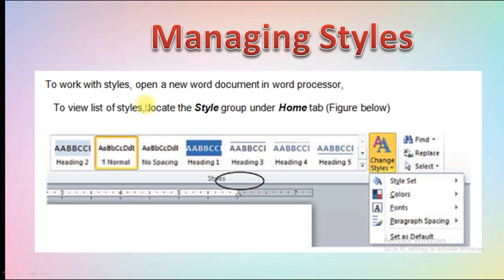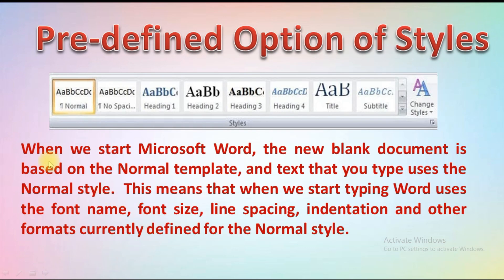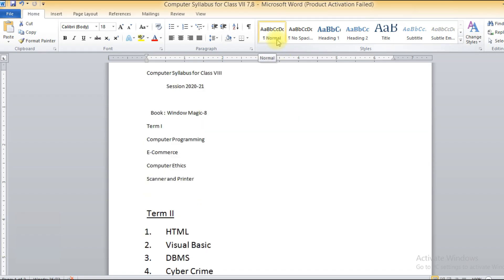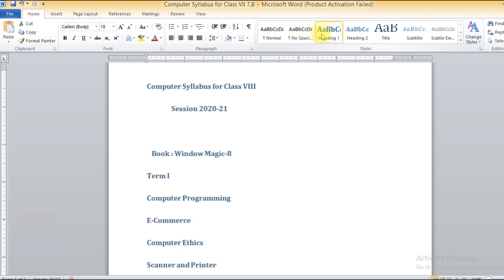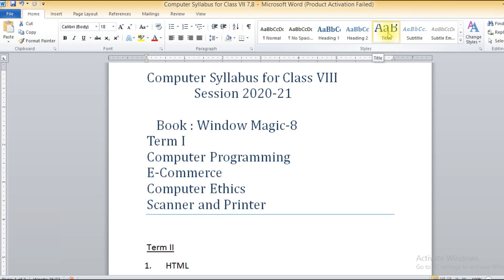To locate the styles, open a new word document. To view a list of styles, locate the Style group under the Home tab. Under the Home tab you have various styles available. You can select any style and set the font accordingly. The default style on screen is always Normal. Select any line of text and change the style — it will be applied to that selection.